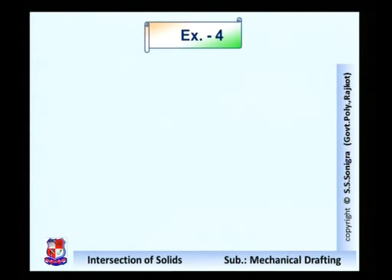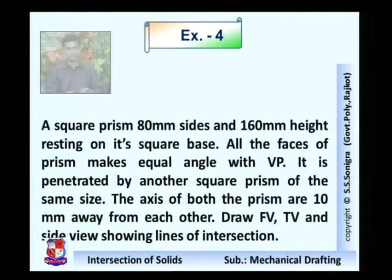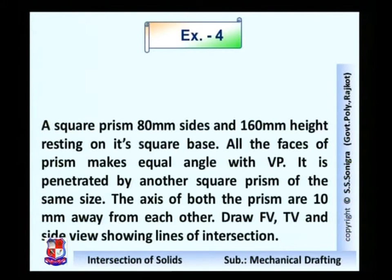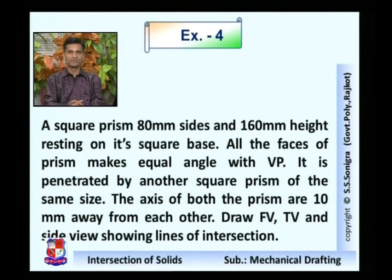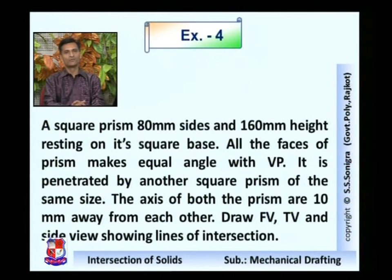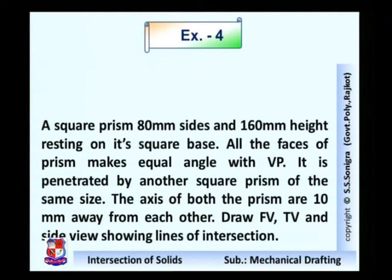Now the next problem — problem number 4. The data is given like this: a square prism 80 mm sides and 160 mm height is resting on its square base. All the faces of the prism make equal angles with the vertical plane. It is penetrated by another square prism of the same size, and the axes of both prisms are 10 mm away from each other. Draw front view, top view, and side view showing lines of intersection. So in this data, two square prisms are given, and we have to draw the intersectional lines. Both are prisms, so there will be no curves — all lines would be straight lines.